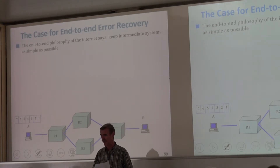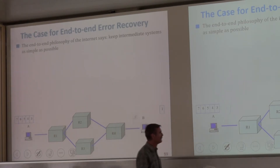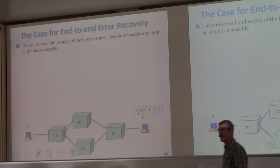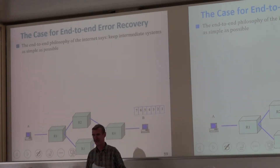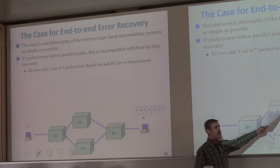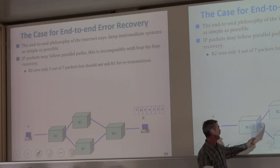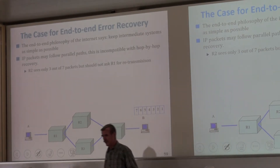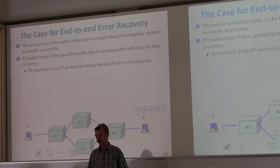That's the end-to-end philosophy. The routers and bridges simply forward packets and don't keep state about the flows. So that speaks in favor of doing end-to-end retransmission. Another reason: we saw different paths in the animation. There would be no possibility for R2 to know whether some packets are missing because they were lost from R1 to R2, or because they simply went some other way. So it speaks in favor of doing things end-to-end.